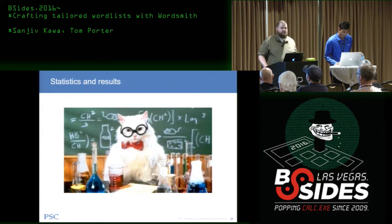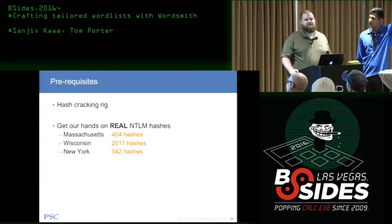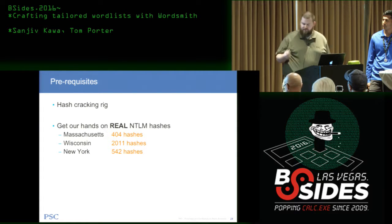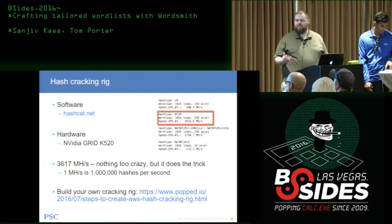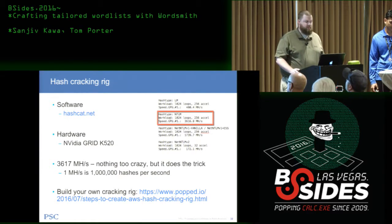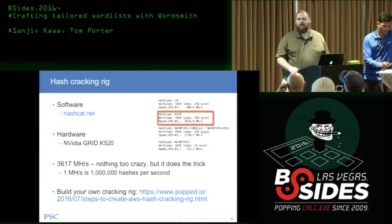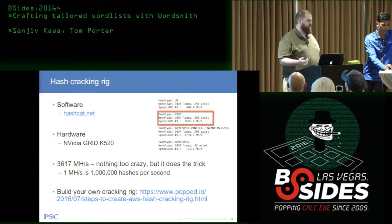We wanted to measure how effective geolocation-based word lists were. We built a hash cracking rig locally and got real NT hashes from actual real-world internal penetration tests — clients in Massachusetts with just over 400 hashes, Wisconsin with about 2,000, and New York with about 500 hashes. Our weapon of choice for cracking NT hashes is Hashcat. The hardware was fairly modest — an NVIDIA Grid K520 — but even with that we could get about 3 billion guess-encrypt-compare cycles per second. Last week, Sanjiv posted on his blog about building your own hash cracking rig in Amazon AWS, walking through spinning up an EC2 instance and getting Hashcat installed and configured.